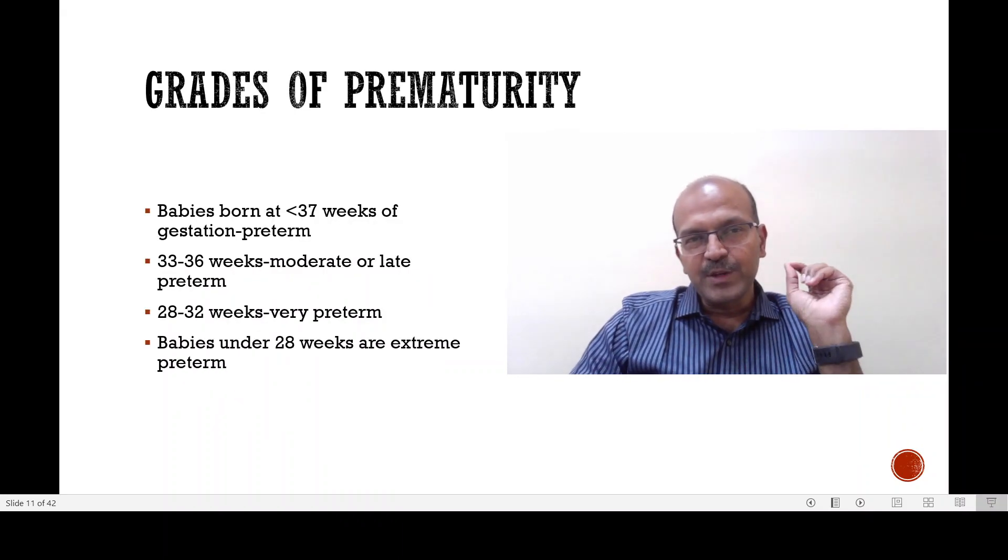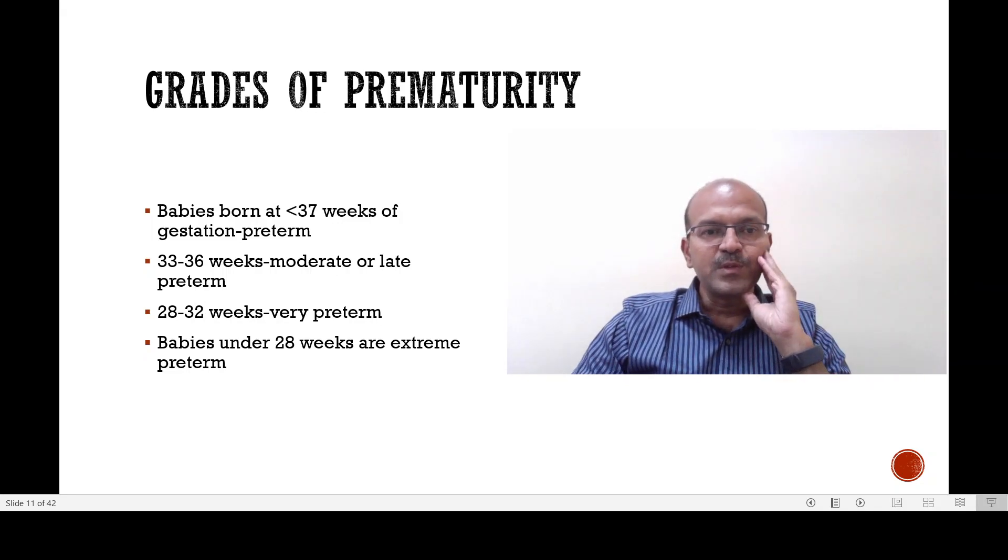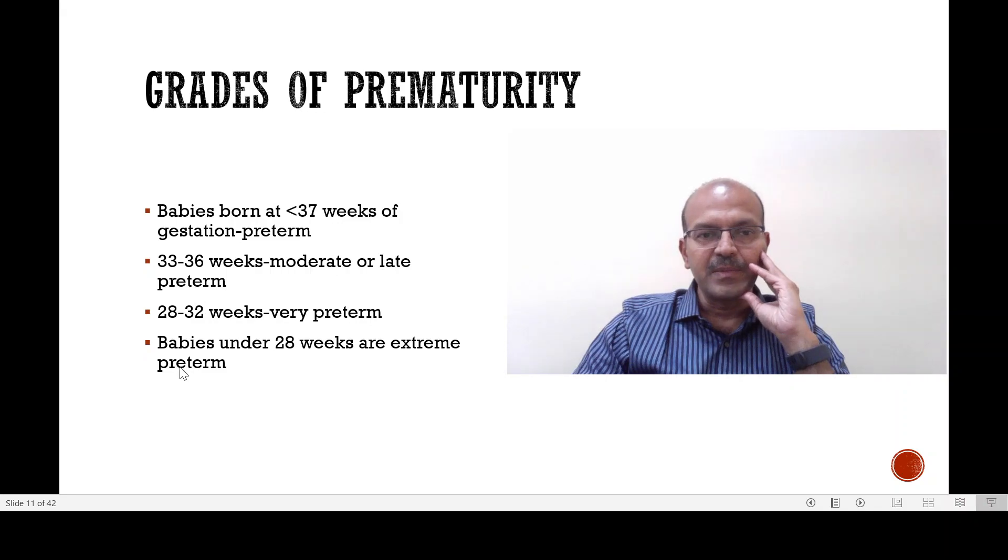To start with I will give you a definition of prematurity. Babies born at less than 37 weeks up to 36 weeks of gestation are premature. The babies who are born 33 to 36 weeks are the moderate or late preterm babies. The babies from 28 to 32 weeks are very preterm and the babies under 28 weeks are extreme preterm.